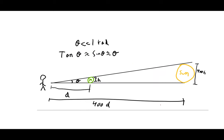An interesting example: the sun and moon subtend nearly the same angular size in the sky, even though the sun is much larger. This means we can calculate the ratio of their distances since they appear the same angular size.